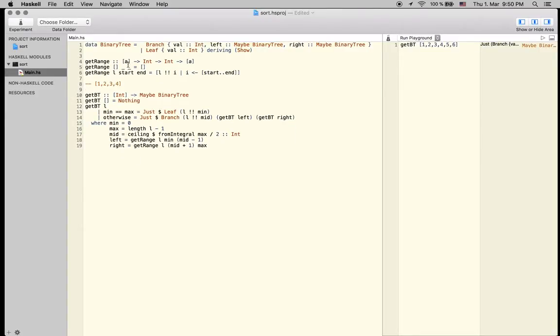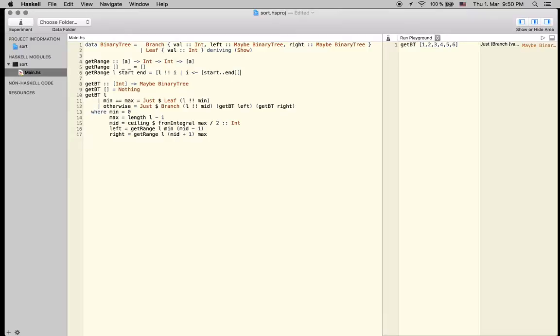And let's get to the next function, which is called getRange. Well, actually, let's skip that. I'll explain it in a second. Here, getBT, BT stands for binary tree. It takes a list of integers. It could actually be anything that you can order, but I just did it with integers for this case. And then we have a maybe binary tree, since if you supply an empty list as an argument, you'll get nothing back. So that's also something nice that maybe allows us to do.